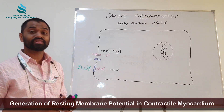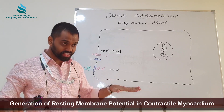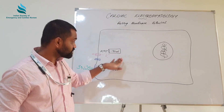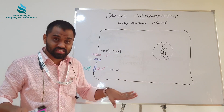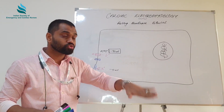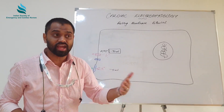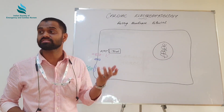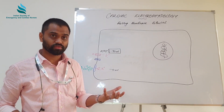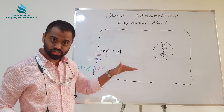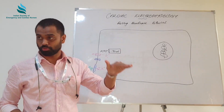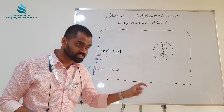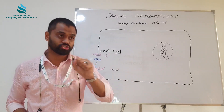This sets the stage for the cell to transition from its resting phase into the active phase and develop an action potential. The stage is set for the action potential. That is the story of the resting membrane potential.